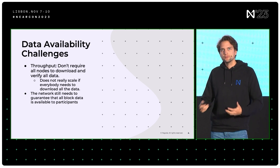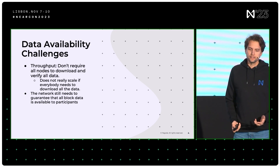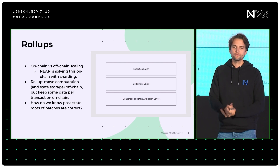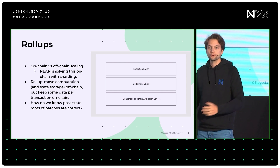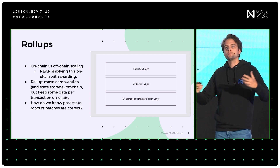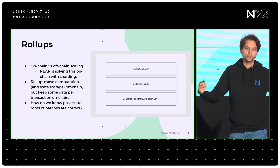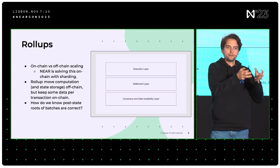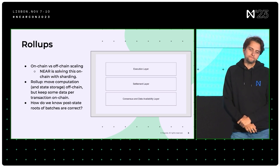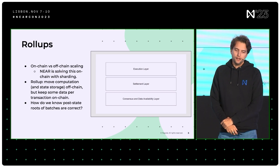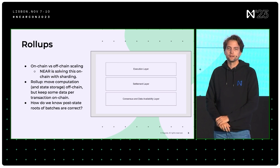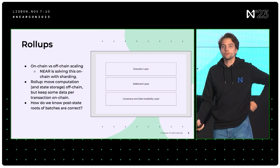How does scaling work in the blockchain space? There are two parts. One is what we're doing at Near Protocol — on-chain scaling. The idea is that not everybody should be verifying all the data; some verify part of it, others verify another part. We're trying to solve this at Near Protocol through sharding, which is an on-chain scaling solution.